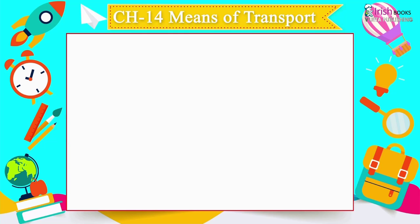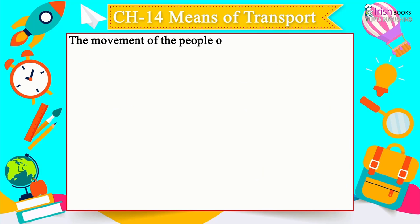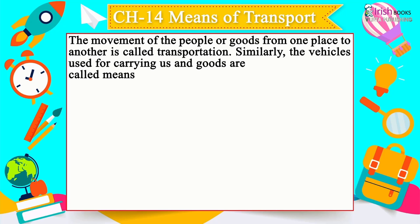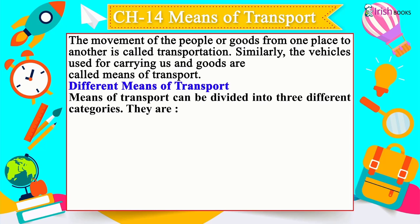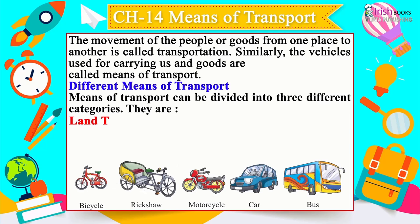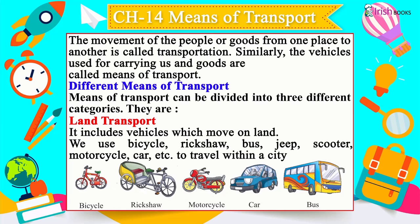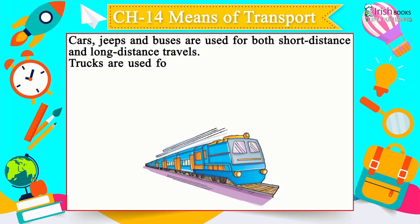Chapter 14: Means of Transport. The movement of people or goods from one place to another is called transportation. The vehicles used for carrying people and goods are called means of transport. Means of transport can be divided into three categories. Land transport includes vehicles that move on land — bicycle, rickshaw, bus, jeep, scooter, motorcycle, car, etc.